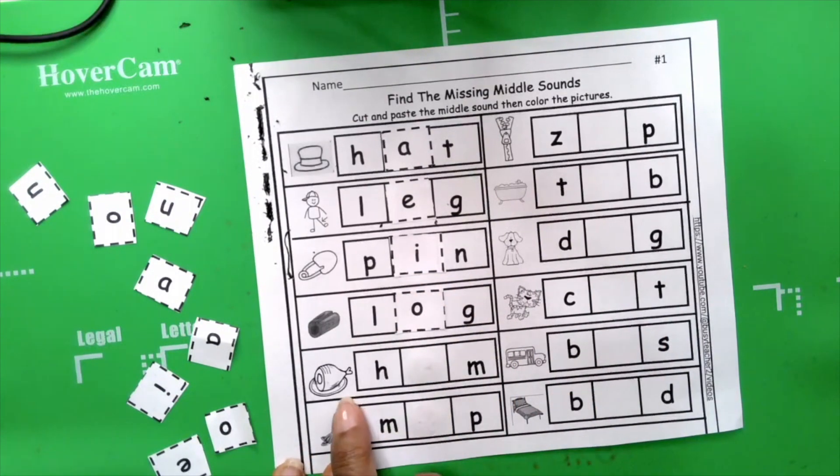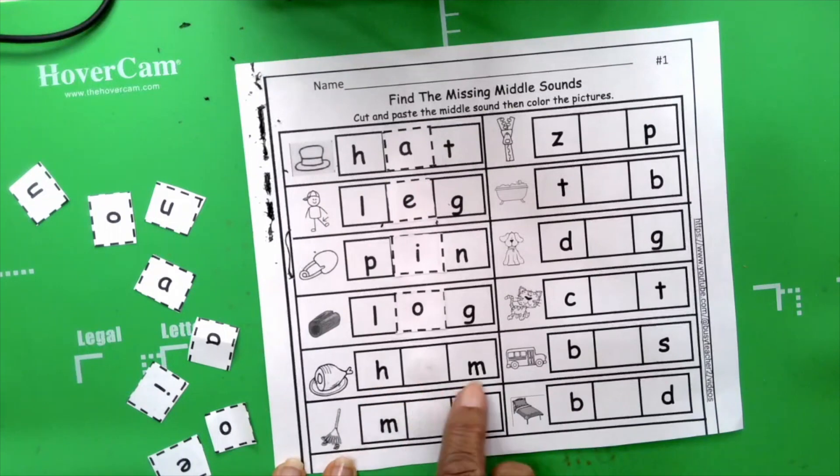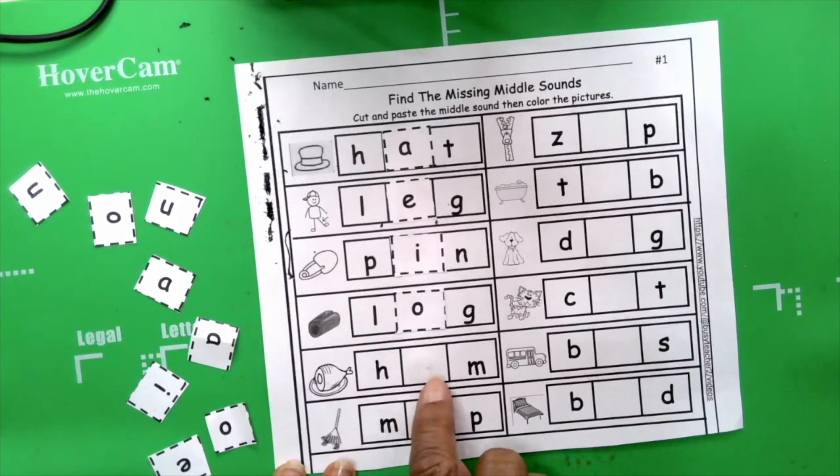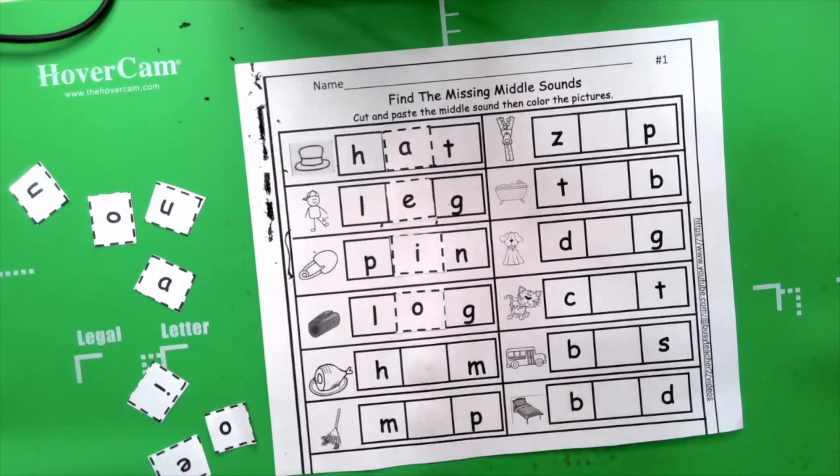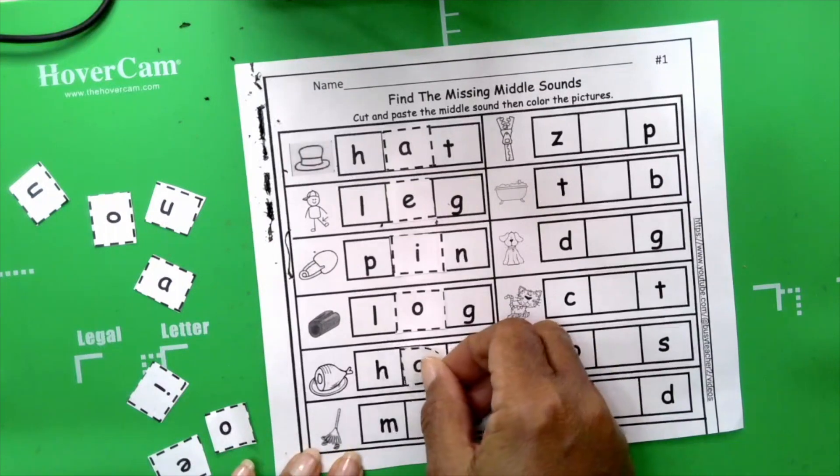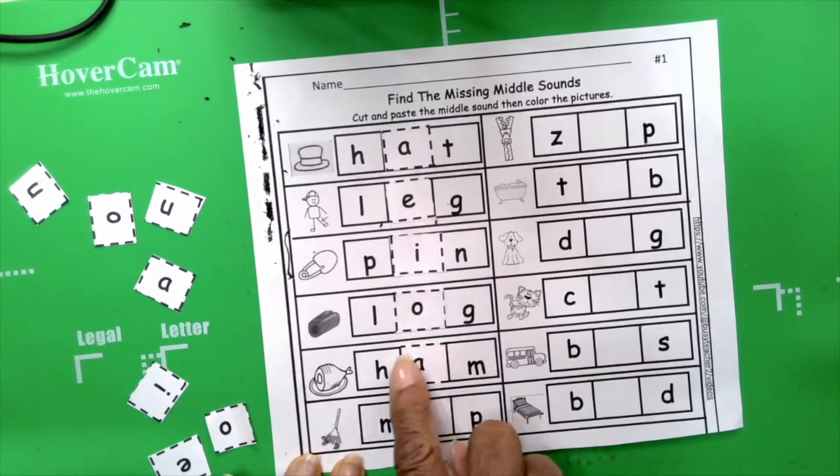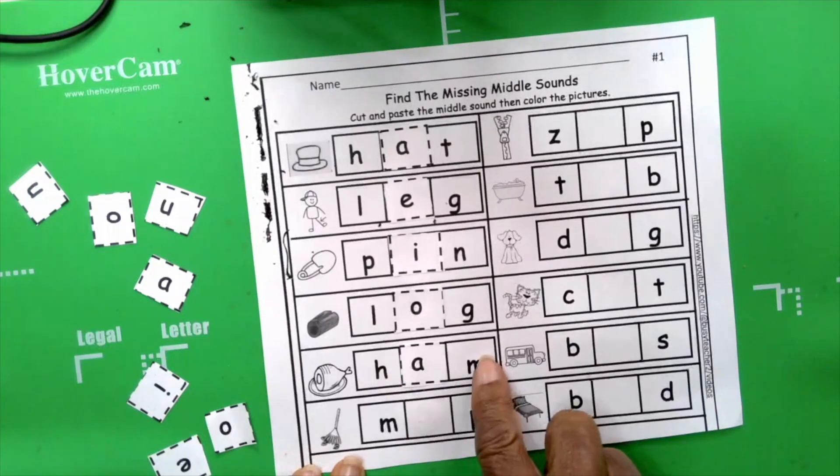Ham. H. Ah. M. Ham. Ah. We know that this is A because it has the same sound as that up there. Ham. Ah. Ham. H. A. M.